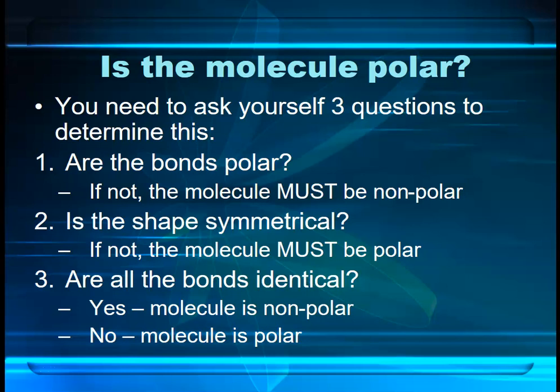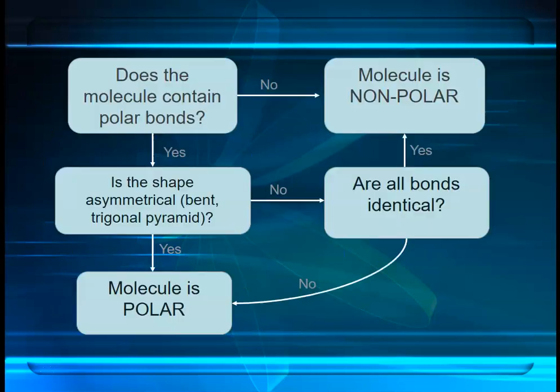So these are the things we need to be asking ourselves: are the bonds polar, is the shape symmetrical, are the bond dipoles all the same? An easy way to think of this is through a flow chart. This is the flow chart I use to determine whether or not a molecule is polar, and if you're thinking about level 3 NCEA the same flow chart works — it just has some different shapes.